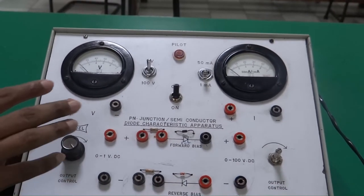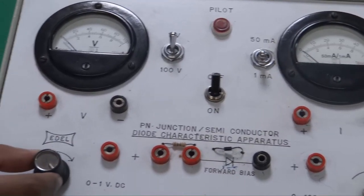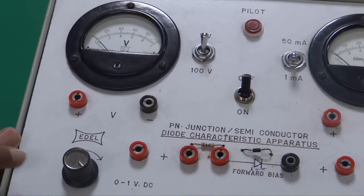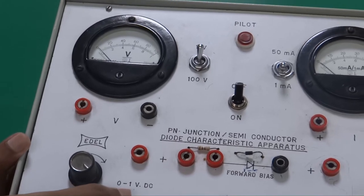Let's talk about the parts one by one. Over here you can see this black knob which is known as the output control. This is giving you a DC supply. You can see the range is given from 0 to 1 volts.